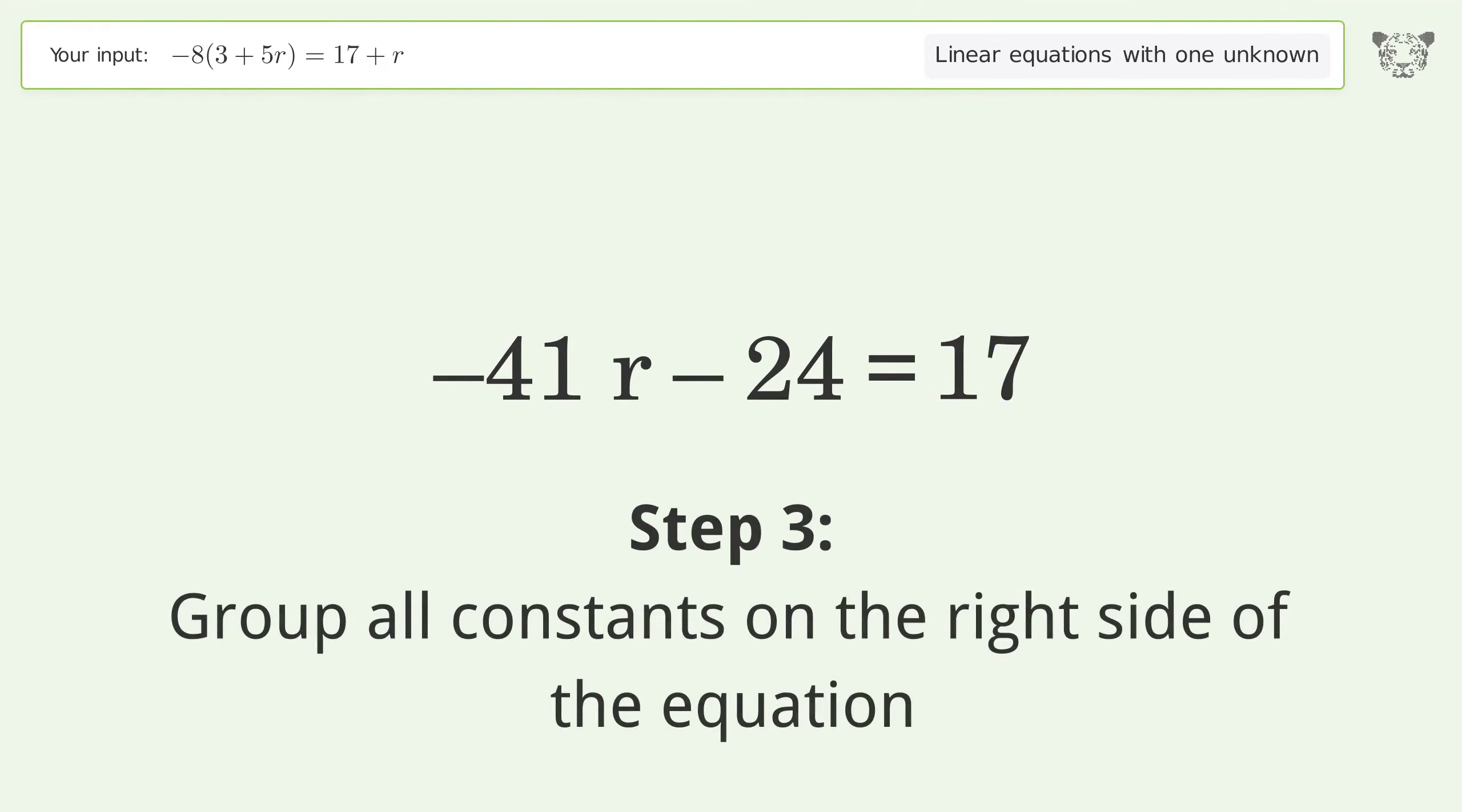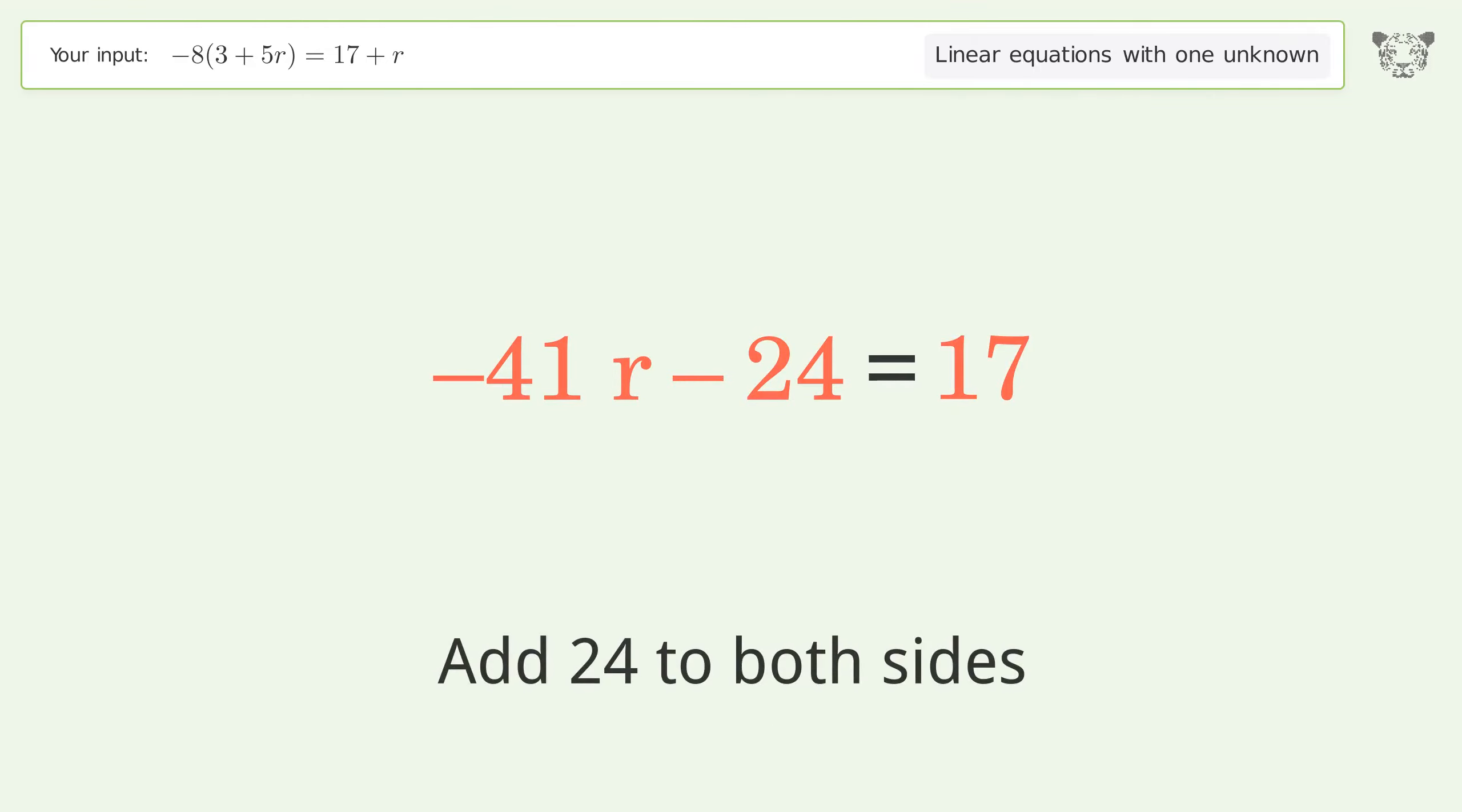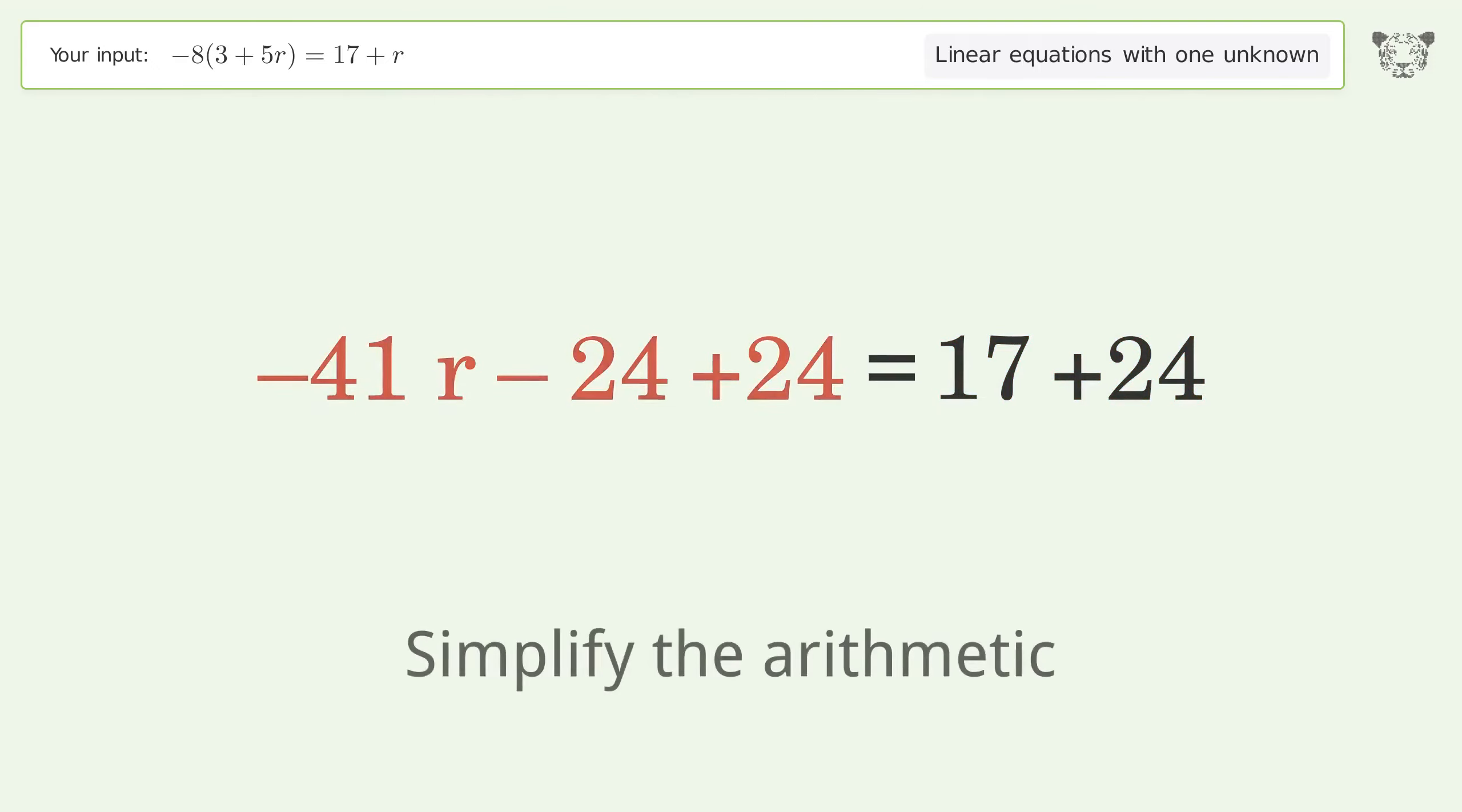Group all constants on the right side of the equation. Add 24 to both sides. Simplify the arithmetic.